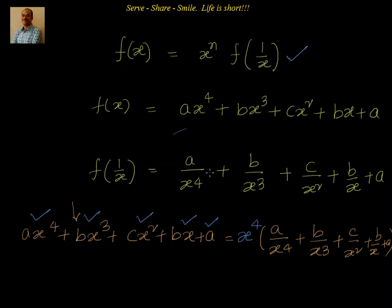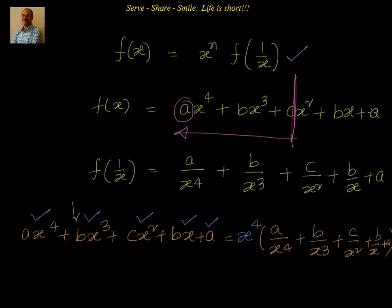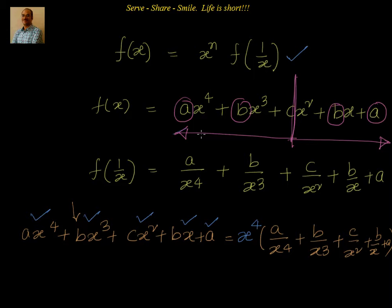Another way of understanding this in simple terms: if you have an equation such that the coefficients of the terms equidistant from the center are equal — for example, with 5 terms, the third term is the center. The coefficient of the first term is a, and the coefficient of the last term is also a. Similarly, the coefficient of the second term is b, and the coefficient of the fourth term is also b. Such an equation is known as a reciprocal equation.